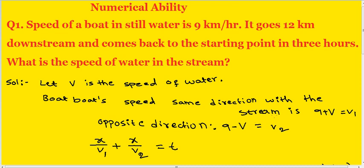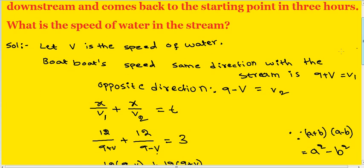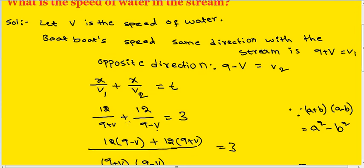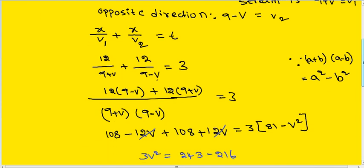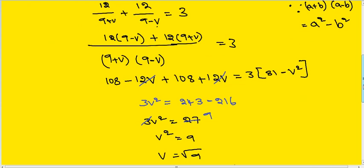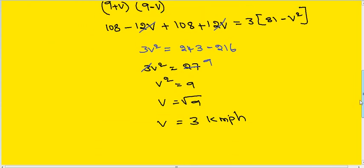The boat's speed in water when going in the opposite direction with the stream is 9 minus v. The formula is x divided by v1 plus x divided by v2 equals t. With distance 12 substituted, we get the answer. Thank you for watching.